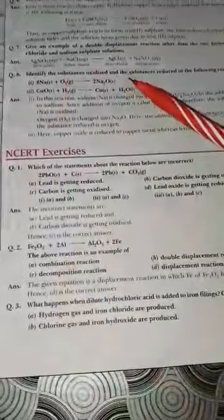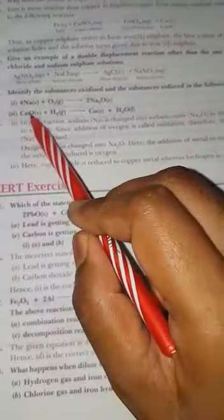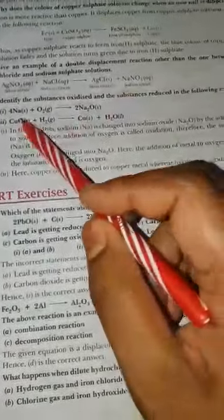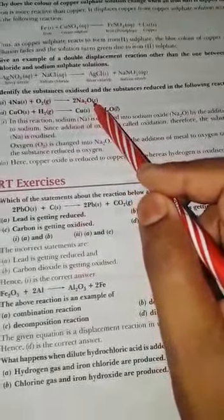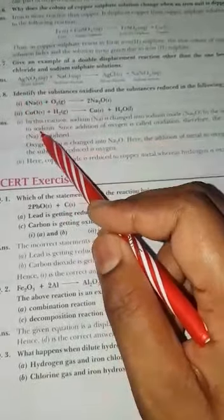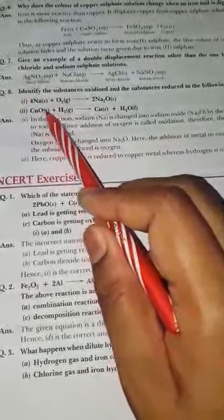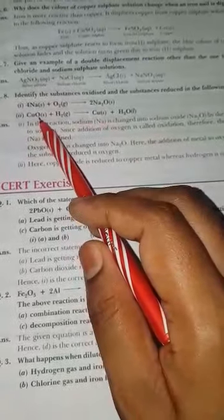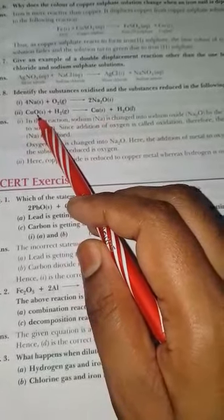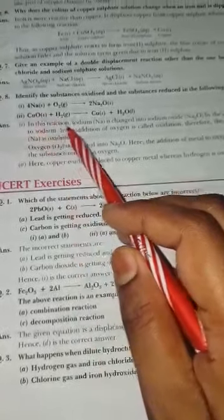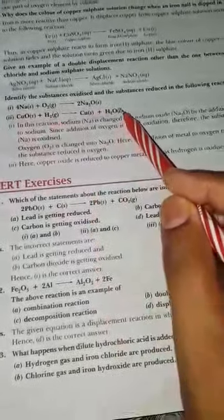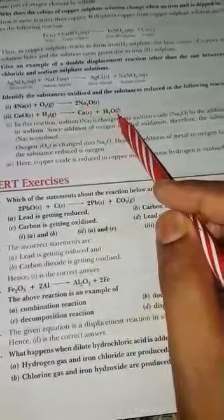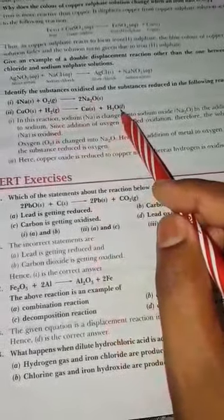Next: identify the substance oxidized and the substance reduced. If you see sodium, addition of oxygen is taking place and sodium is converting to sodium oxide, so sodium is oxidized to sodium oxide. Copper oxide is getting reduced to copper because removal of oxygen is occurring from copper oxide. Hydrogen is also getting oxidized since it is converting to water, meaning addition of oxygen is taking place.